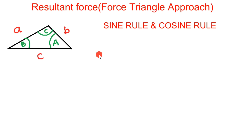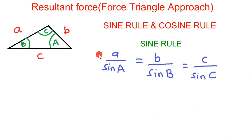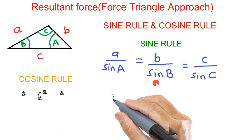Let's first look at the sine rule. The sine rule says that if you want to find any of the sides or angles of this triangle, you can use the formula: side a over sine of angle A equals side b over sine of angle B equals side c over sine of angle C. One thing about the sine rule is that you don't need all three terms — just two of these terms are enough to calculate for the unknown side or angle.